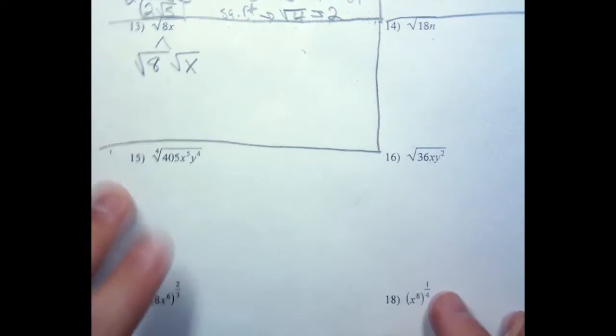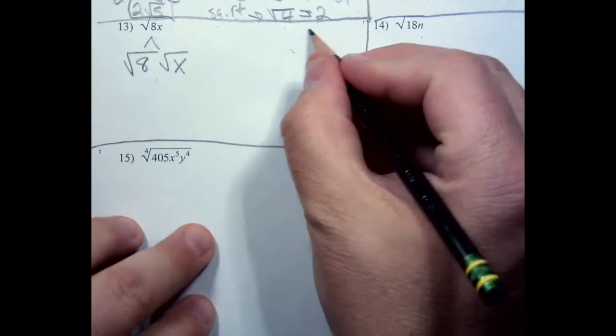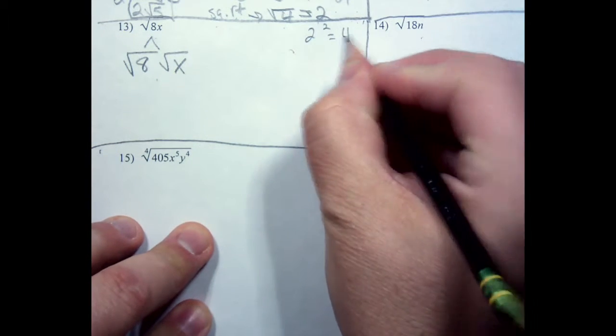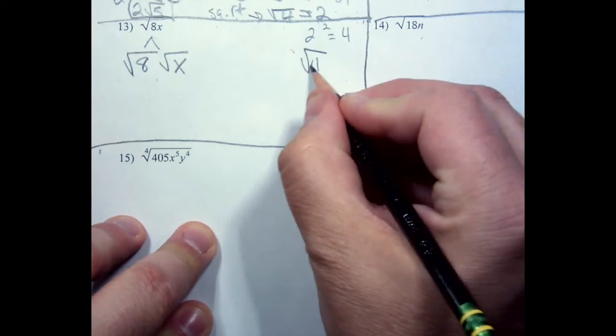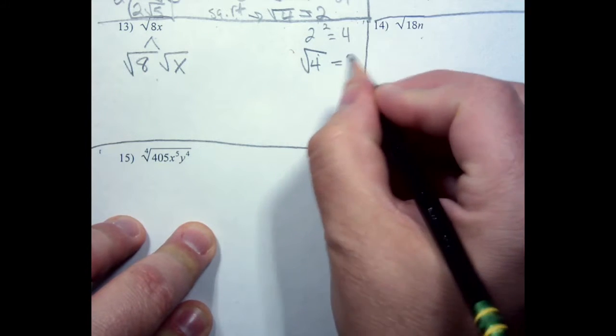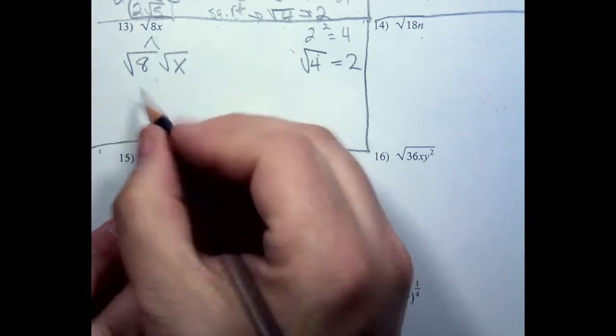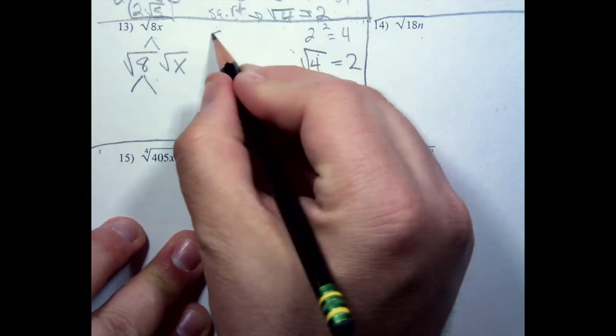Now remember that 2 squared is equal to 4, so that means the square root of 4 is equal to 2. So I can take 8, because remember that 8 is equal to 4 times 2.